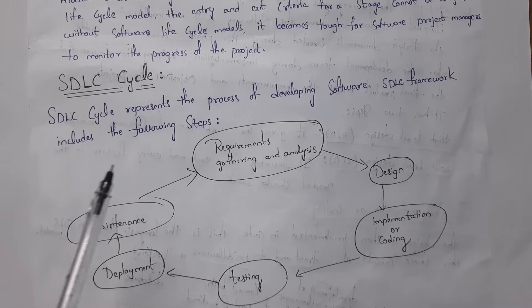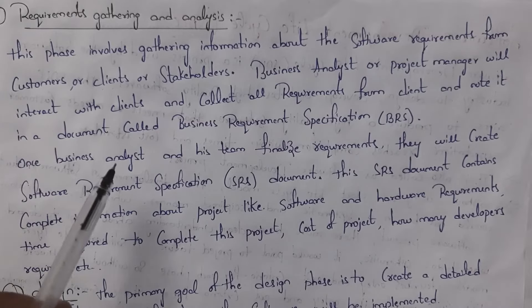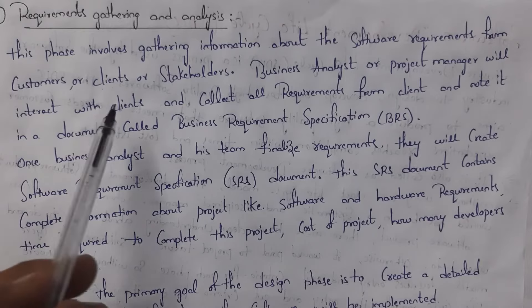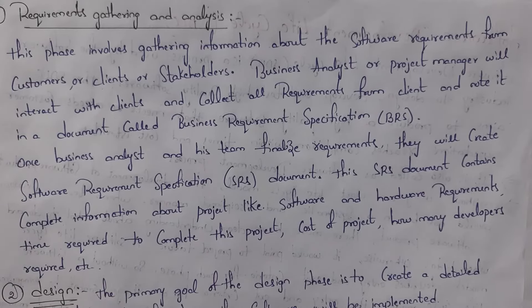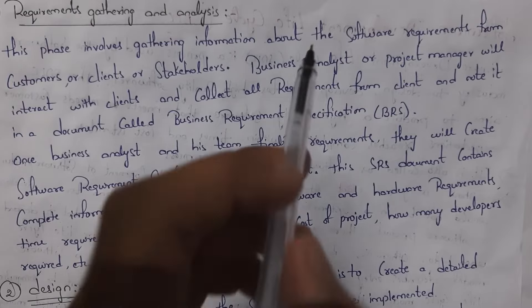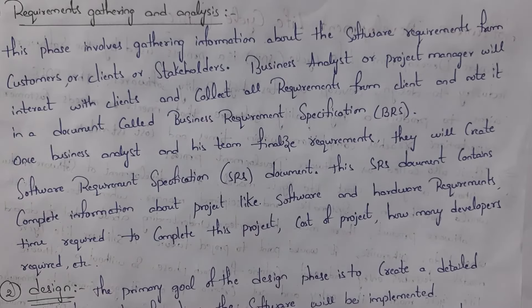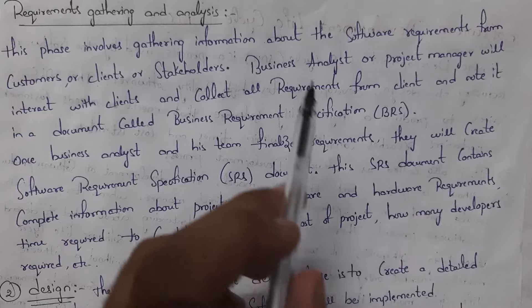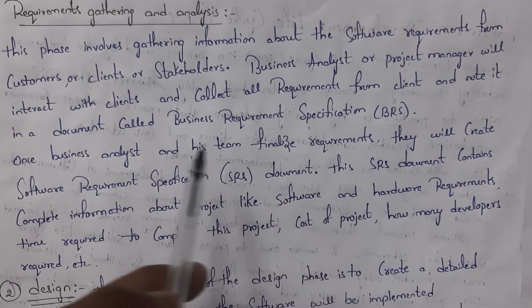First is requirement gathering and analysis. In each and every software company there will be a business analyst or project manager. They will communicate with clients — clients are the people who want software. For example, if I am a college owner wanting a college application, I act as the client. I'll go to the software company, meet the business analyst, and tell them my requirements: the software must have login forms for students and faculty, display student attendance and marks, faculty details, and so on.